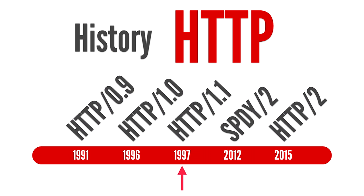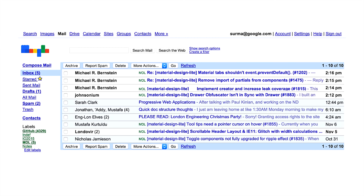Only a year later, HTTP 1.1 came, which is kind of weird to move that fast. But there were problems that had to be addressed. HTTP 1.1 added the OPTIONS method, which you needed for cross-origin communication. You had the host header, which became obligatory because people started hosting multiple websites on the same server. You had more control over caching, and most interestingly, keep-alive was added.